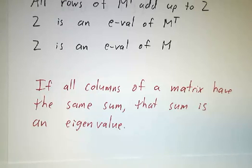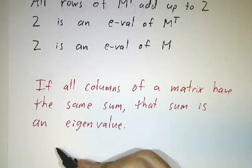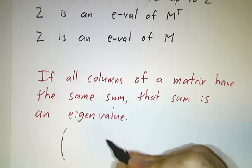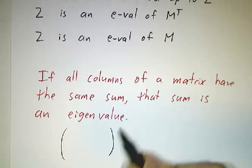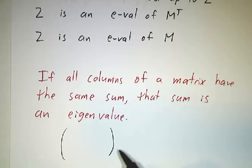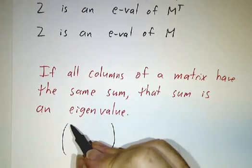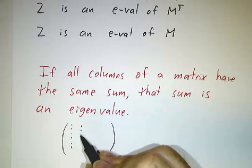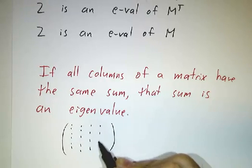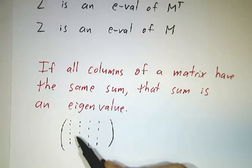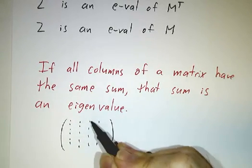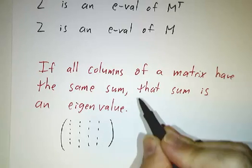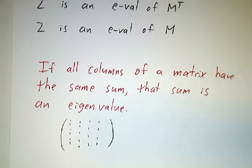This often comes up in probability, where you're dealing with matrices that describe the probability of a situation tomorrow as a function of today's probabilities, and each column adds up to 1. That's called a probability matrix — a matrix where each entry is non-negative and the columns add up to 1. By this principle, such matrices always have 1 as an eigenvalue.